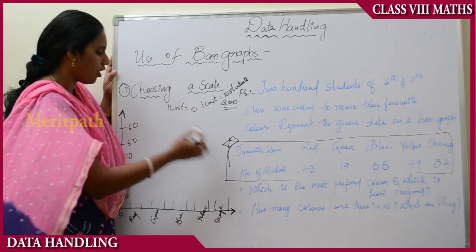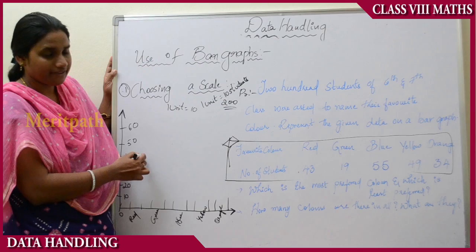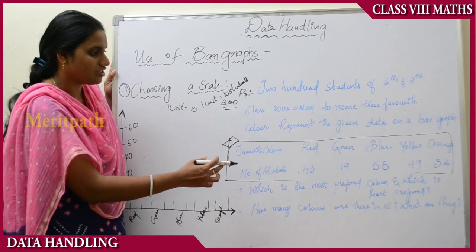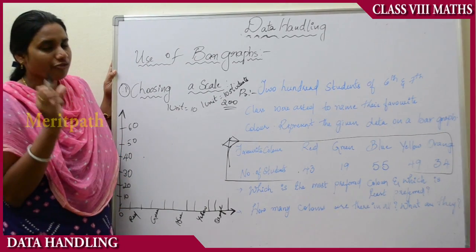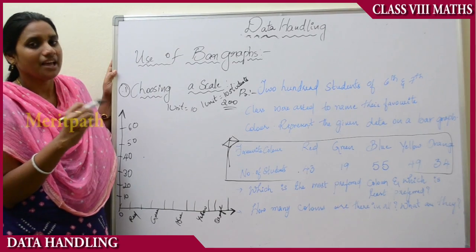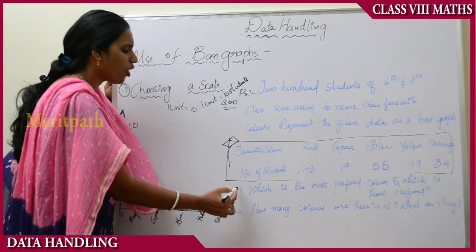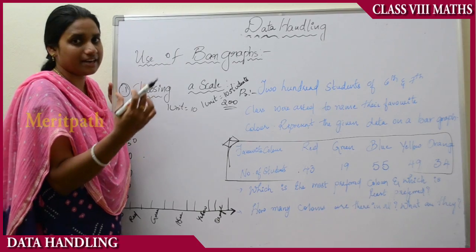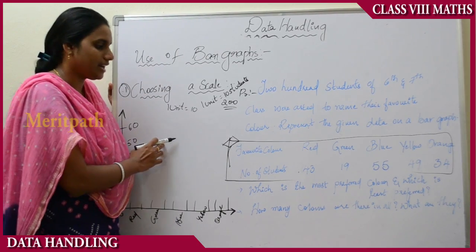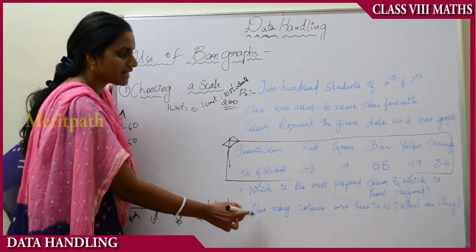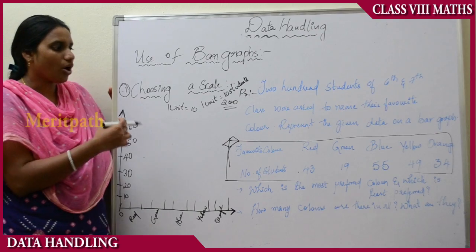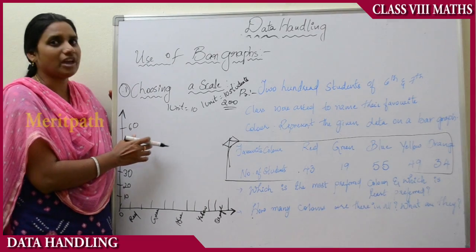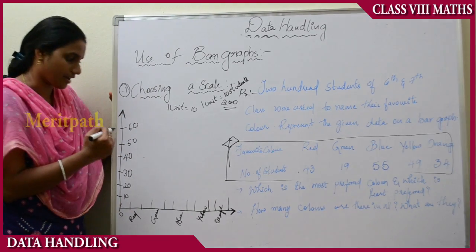Now we have to draw these on a sheet with the help of a graph. We need to find which is the most preferred color and which is the least preferred color. The most preferred color means the majority of students preferred that color. The least preferred color should also be identified. Additionally, how many colors are there in total should be recorded using the bar graph.